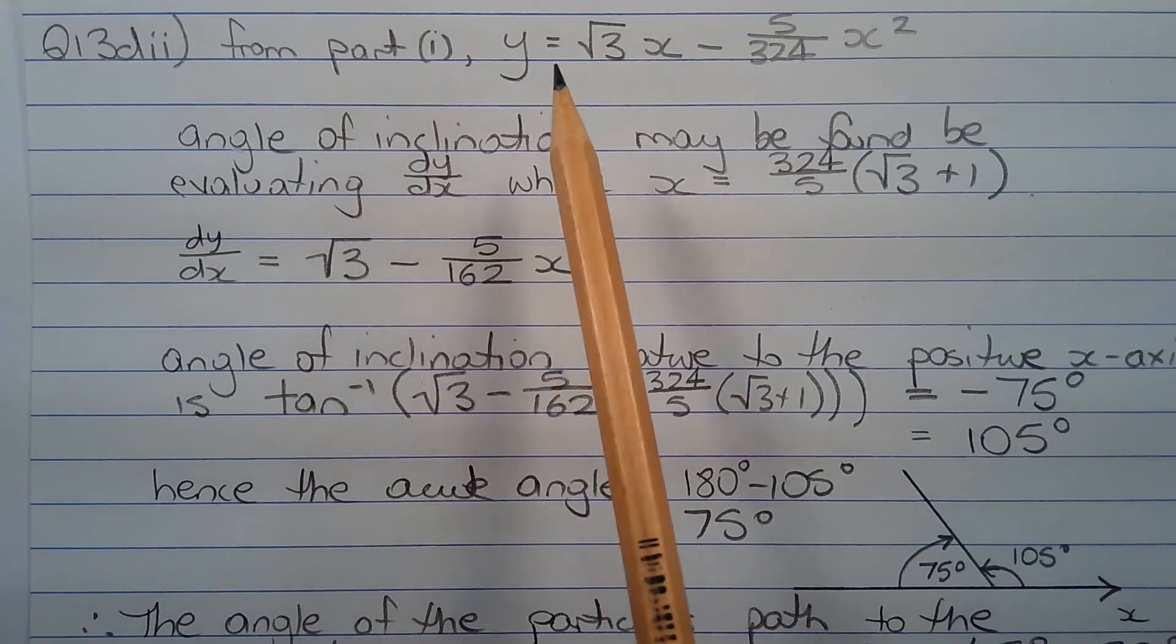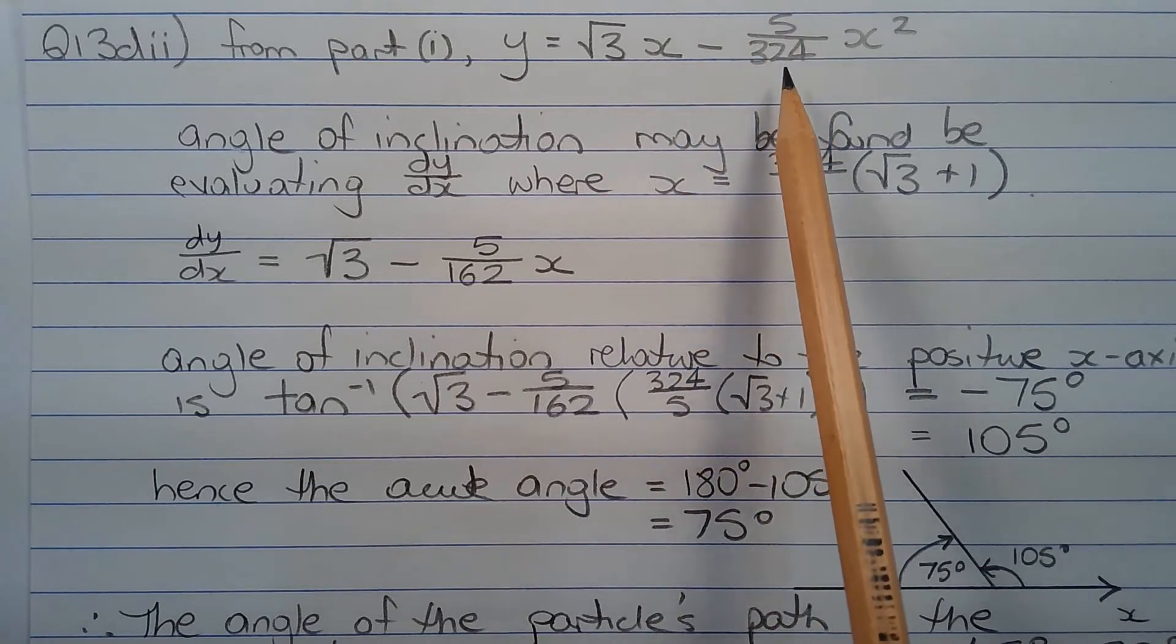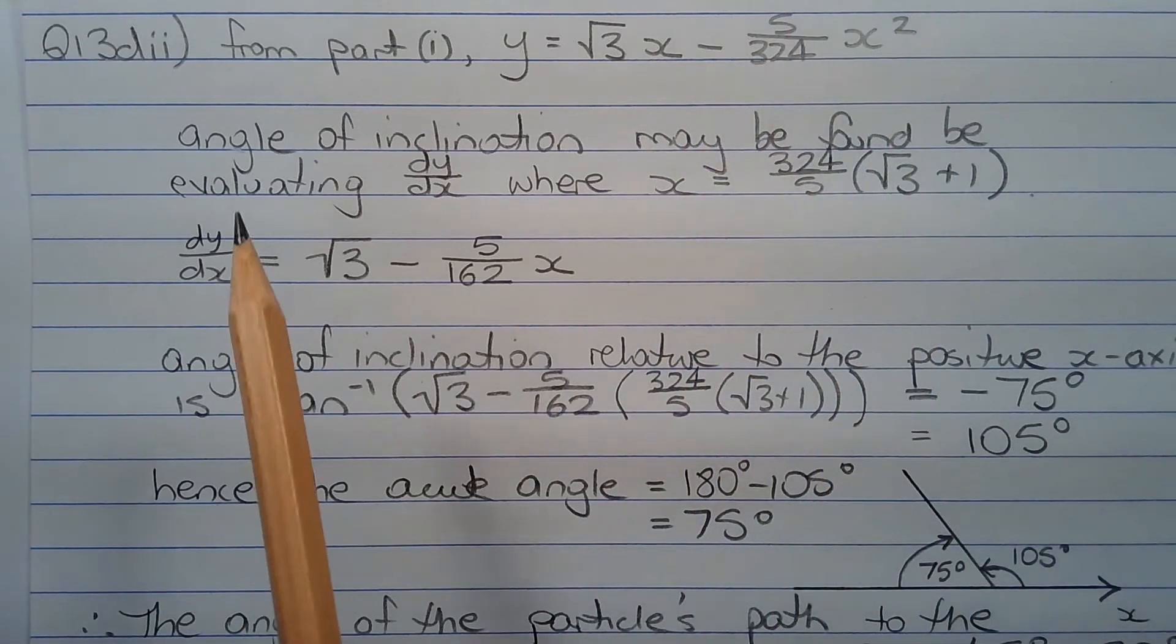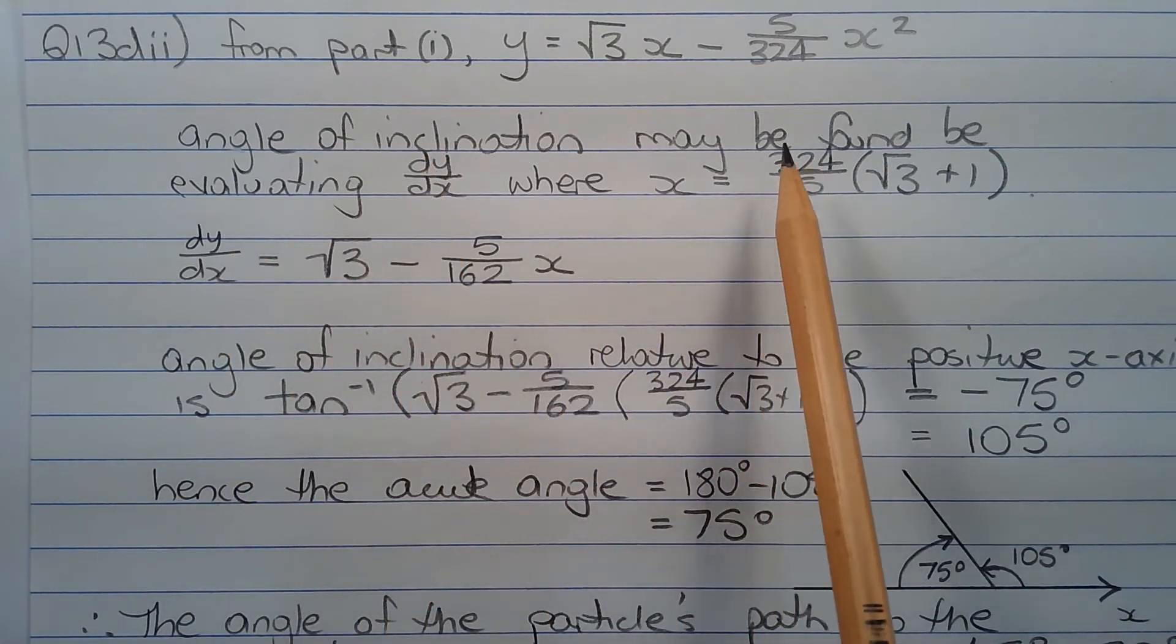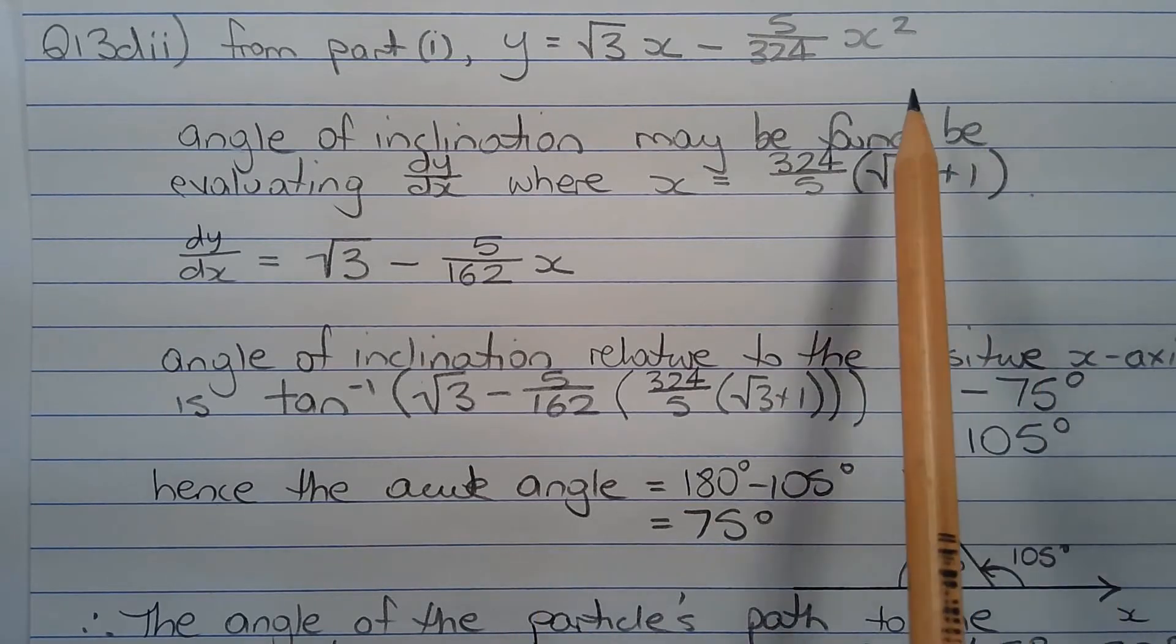From part one, the Cartesian equation is y equals root 3x minus 5 over 324 x squared. The angle of inclination may be found by evaluating dy dx where x equals 324 over 5 times root 3 plus 1. Recall that this is the x coordinate of the point A.